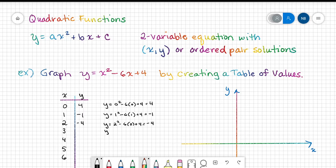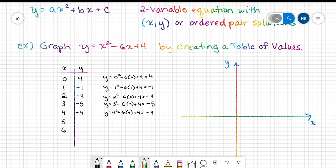When we plug in three for x, we get three squared minus six times three plus four, which is negative five. When we plug in four for x, we get four squared minus six times four plus four, which is equal to negative four. When we plug in five for x, we get five squared minus six times five plus four, which is equal to negative one. And then we plug in six for x, and we get positive four.